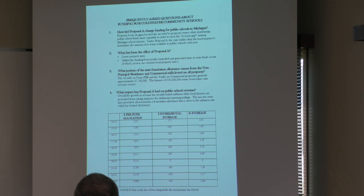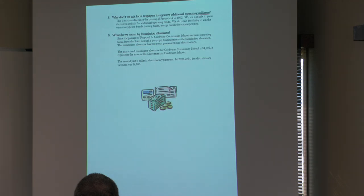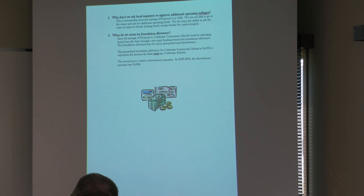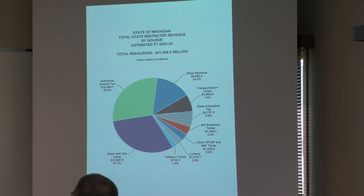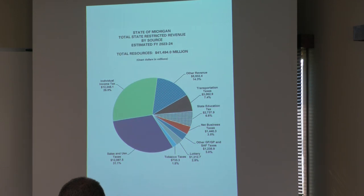Currently for the 23-24 year, we're at $9,608 per pupil. With the operating millage, we can't go ask for more money from the public because that's based on Proposal A — it's already set. The state takes our taxable values into account and gives us the difference we don't receive in taxes, equating to what they call the foundational allowance. Their restricted revenues come largely from sales and use tax, individual income tax, and the state education tax.